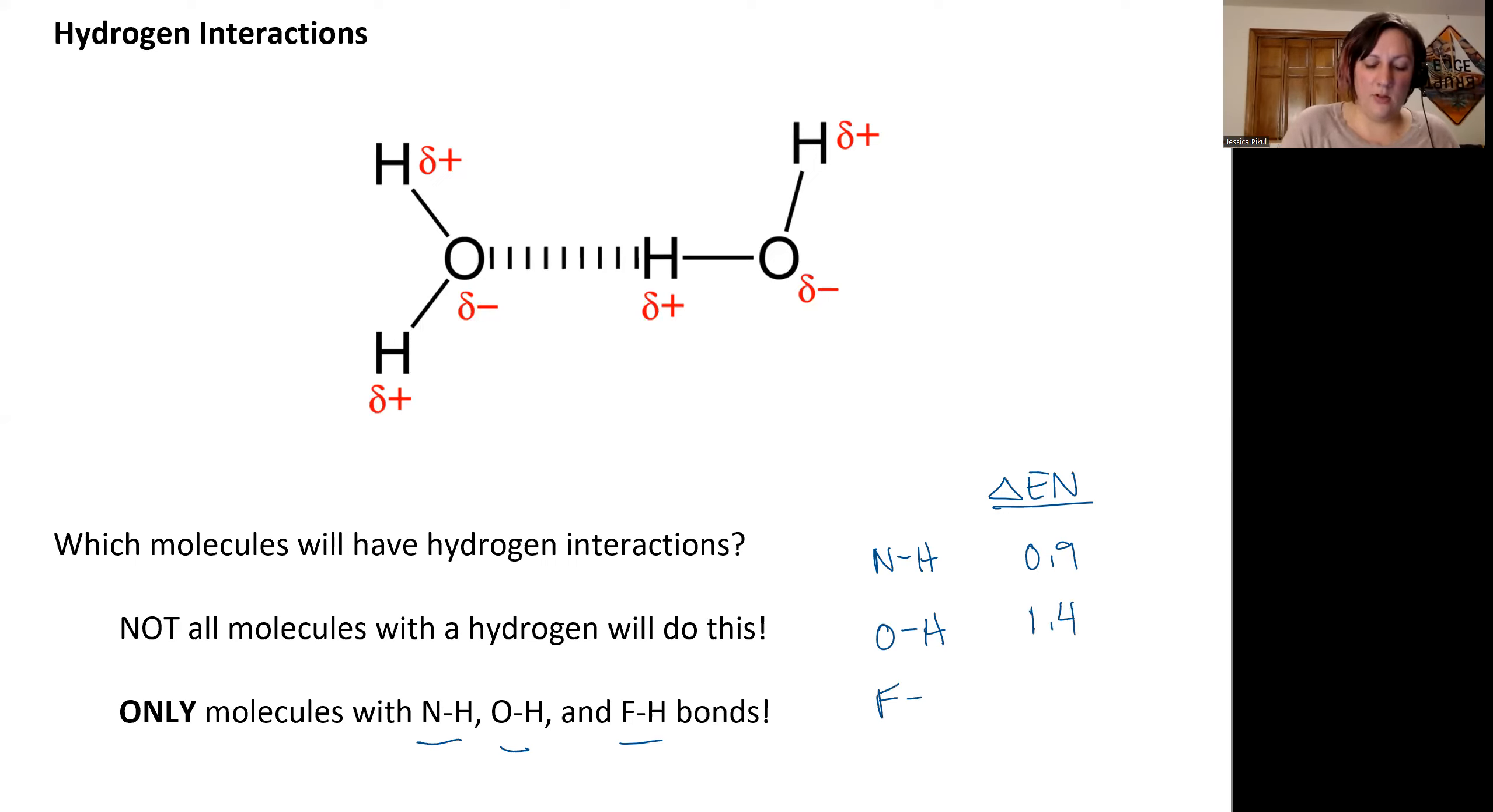And fluorine-hydrogen, fluorine is at 4.0, hydrogen's 2.1, is 1.9. And so this is kind of the top end before we start seeing a more ionic bond between atoms. So these are all pretty large.